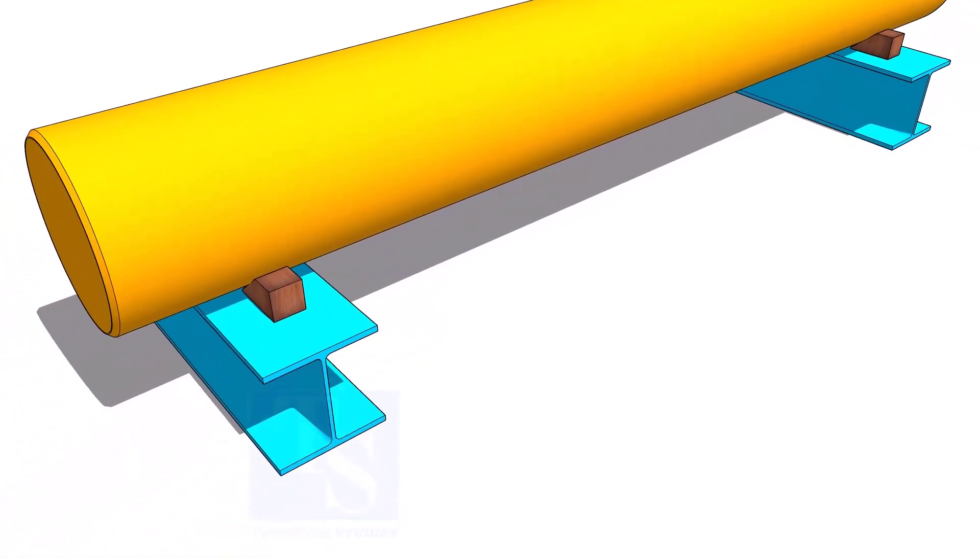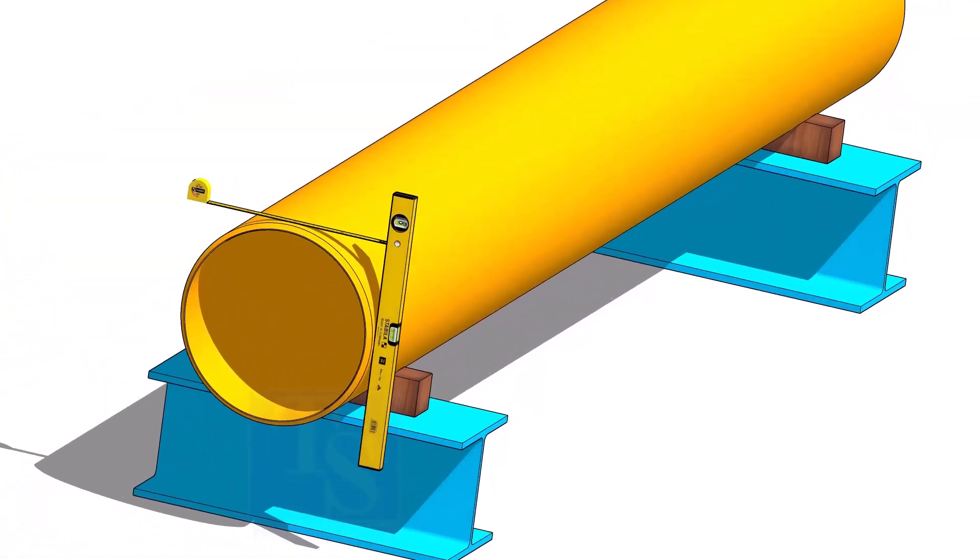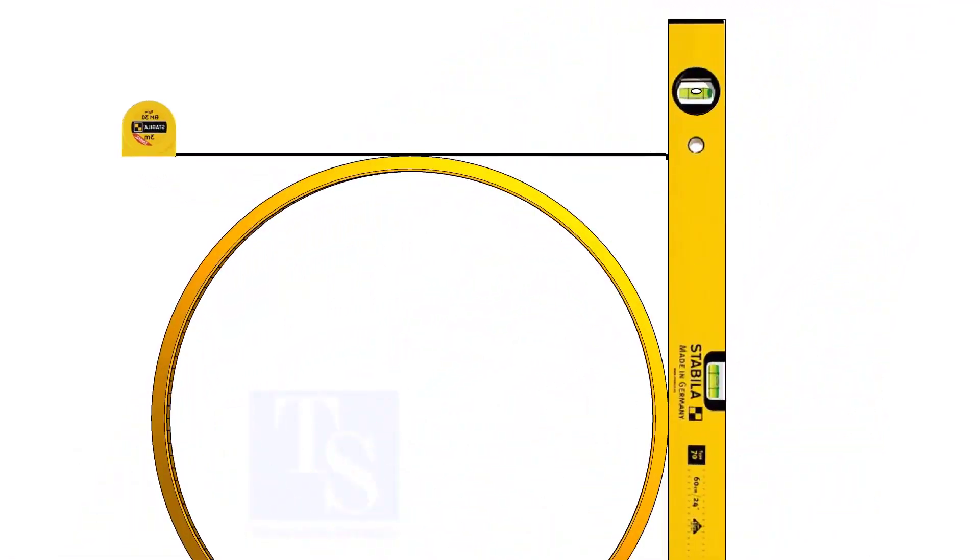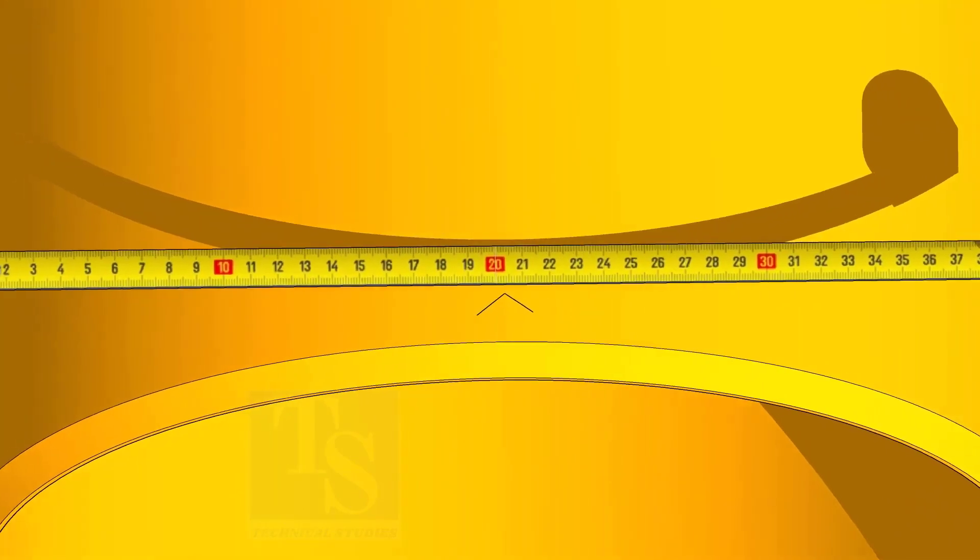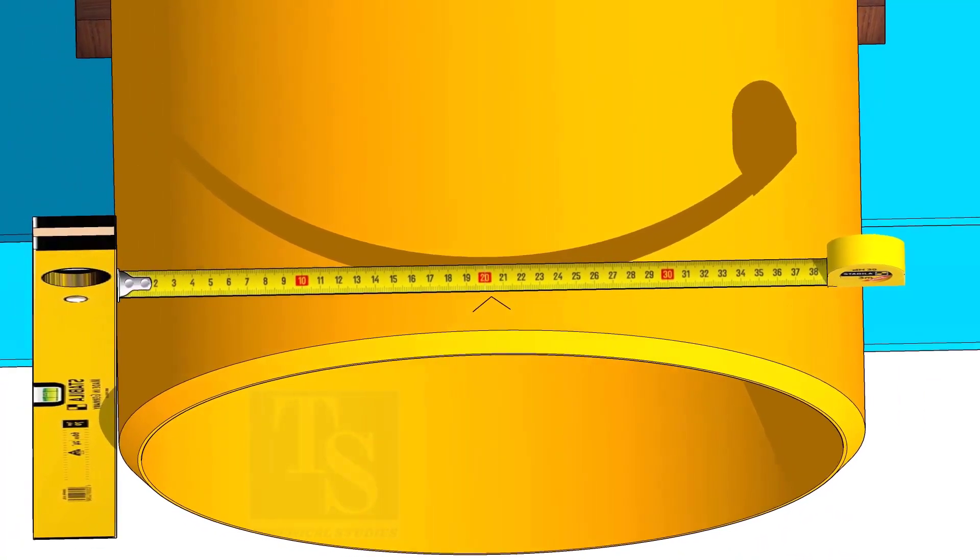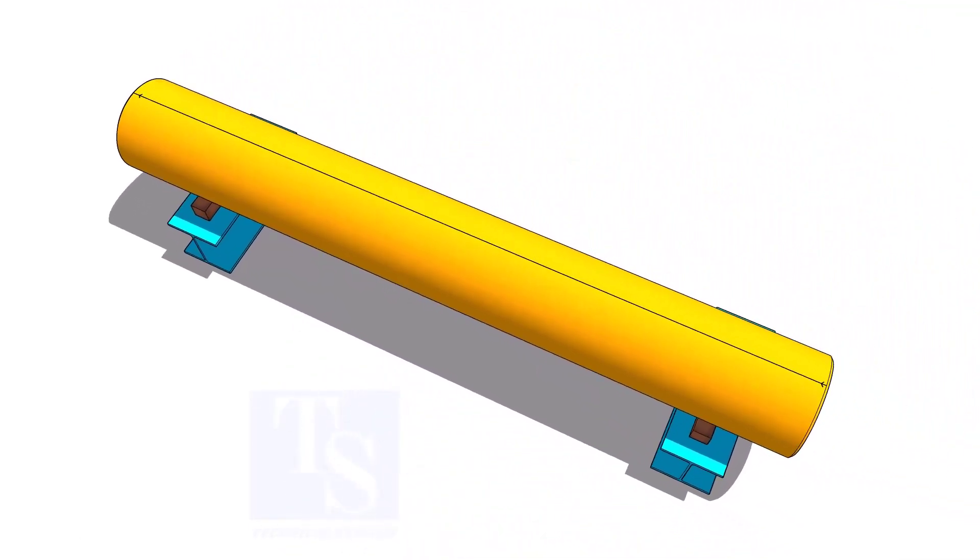After leveling the pipe, hold a level bottle vertically at the side of the pipe as shown. Mark the half OD on the top of the pipe and cross-check from the opposite side. Mark the center of the other end of the pipe and draw the center line.